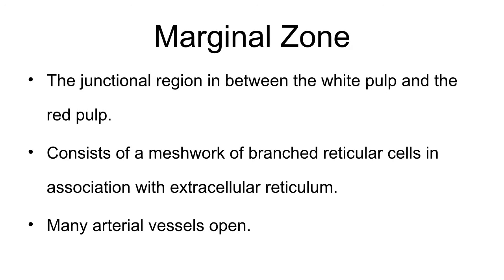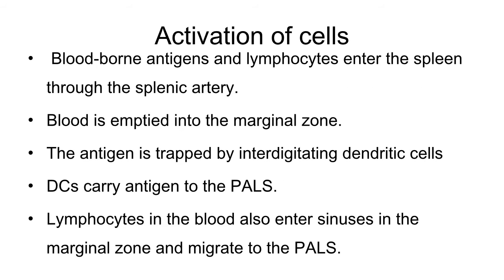Many arteries open inside the marginal zone, so any antigen present in the blood is brought to the spleen through the splenic artery and emptied into the marginal zone. The antigen is trapped by the interdigitating dendritic cells present in the marginal zone. These dendritic cells carry the antigen and express it with class 2 MHC molecules, presenting the antigen to the T helper cells present in the PALS. Lymphocytes present in the blood also enter the sinuses in the marginal zone and migrate to the periarteriolar lymphoid sheets.